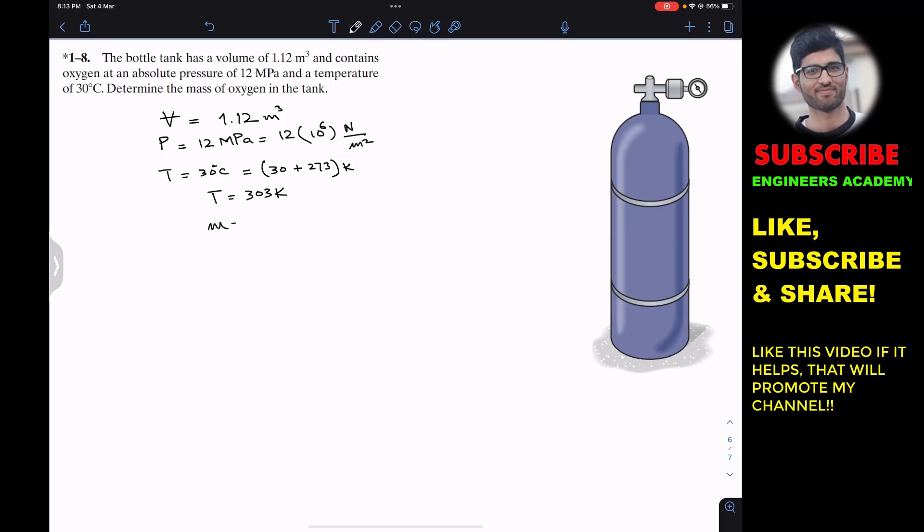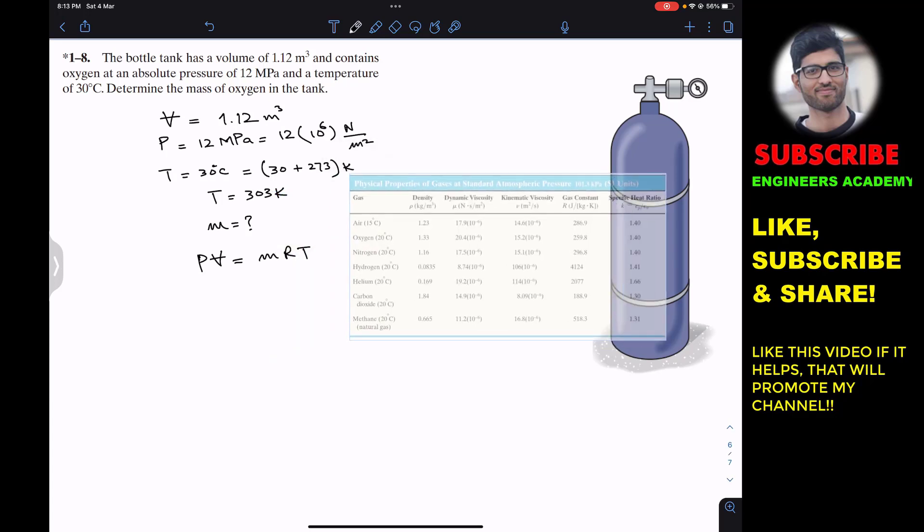We are required to find the mass. We know from the ideal gas equation that PV is equal to MRT. From appendix A of this particular book, we can find the R value for oxygen.